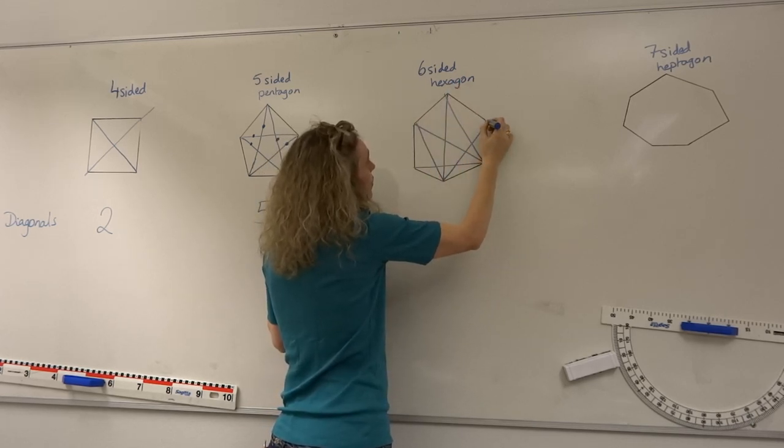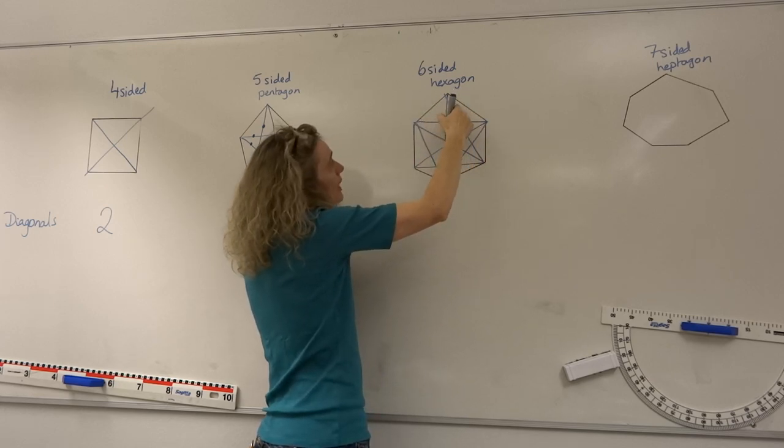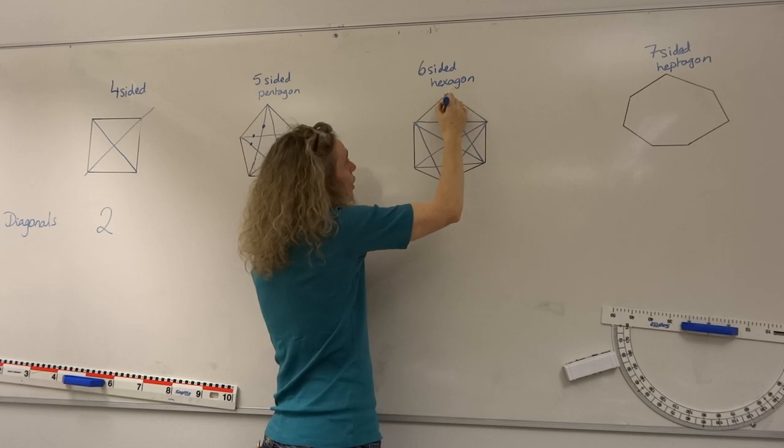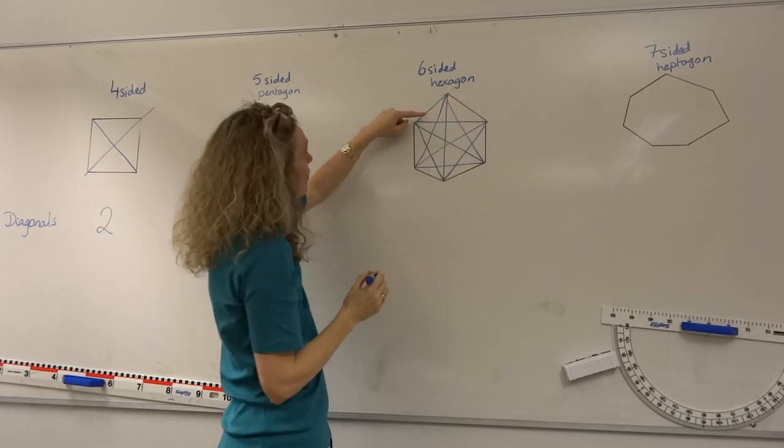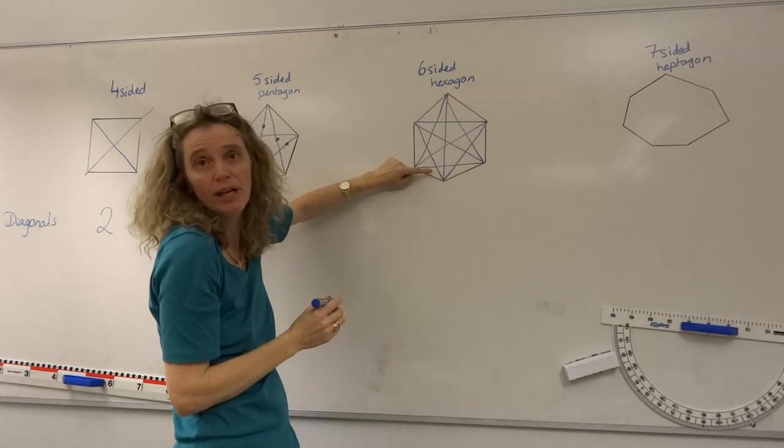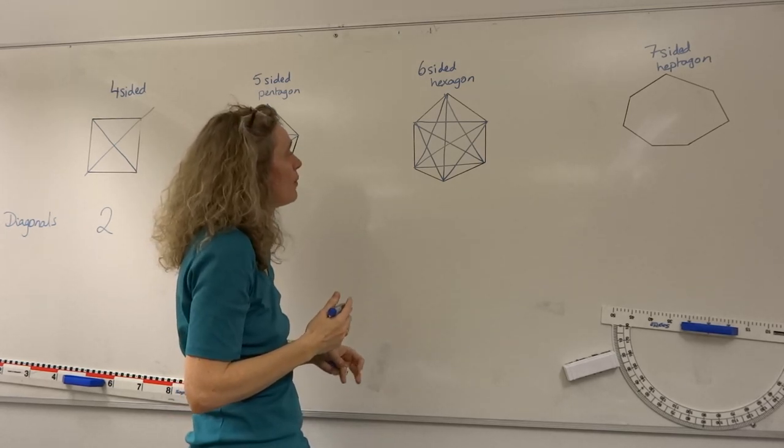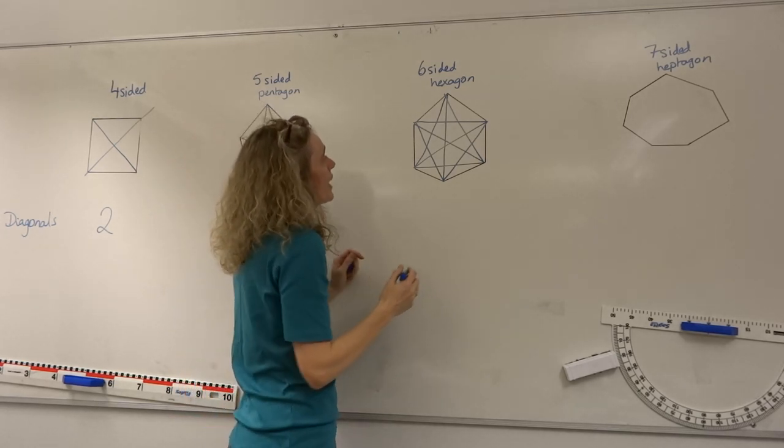This corner only has one at the moment. We've got to make one, two, three. This one has two coming out of it already. We've only got one more to make. And both of these two already have three because we've already connected from the other corners. And then we can just start counting up our diagonals.